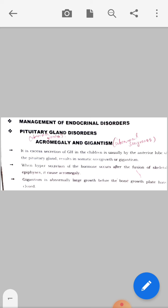First disorder is acromegaly and gigantism. Acromegaly is abnormal growth in children, and gigantism is also abnormal growth in children. This disorder is particularly seen in children only. It is excess secretion of GH in the children, usually by the anterior lobe of the pituitary gland.